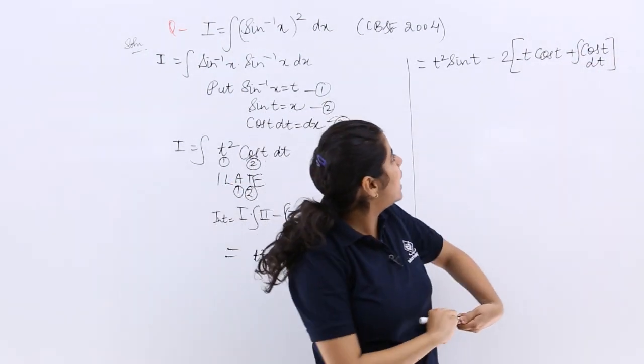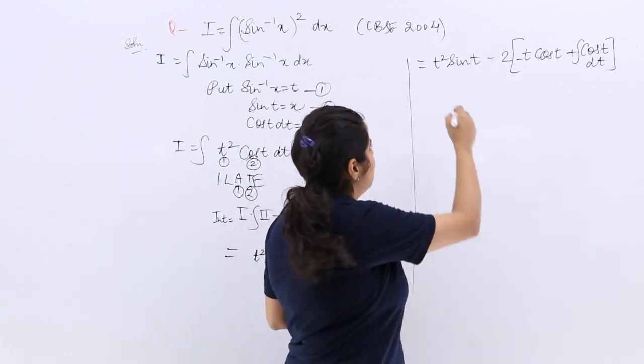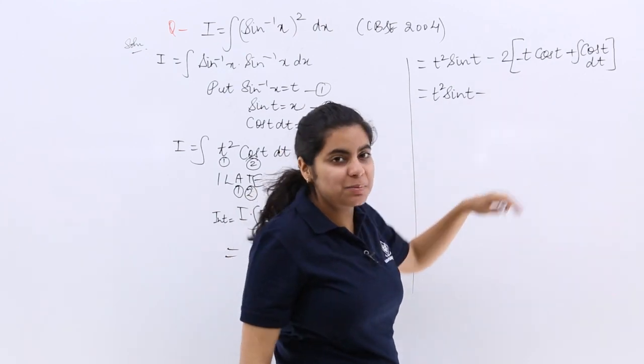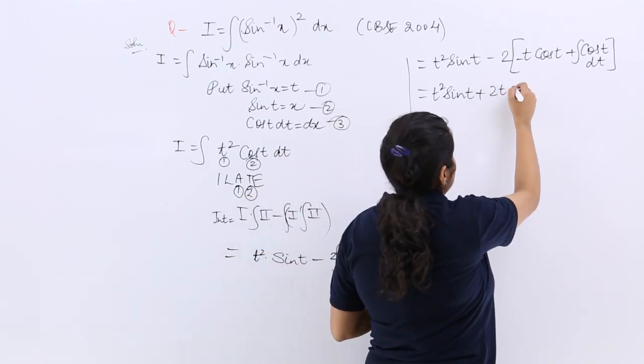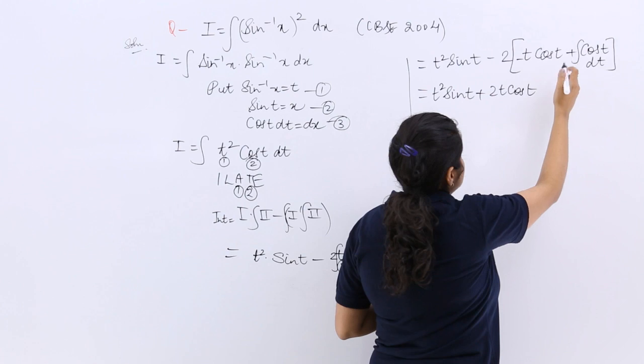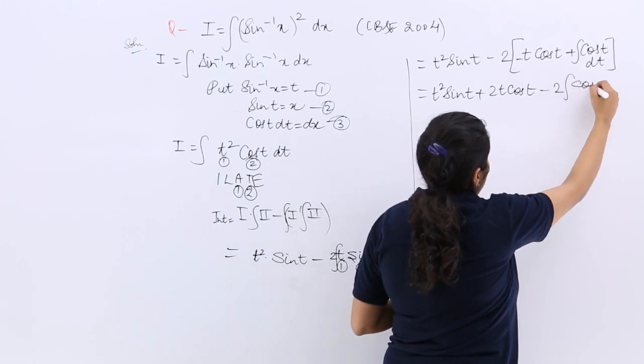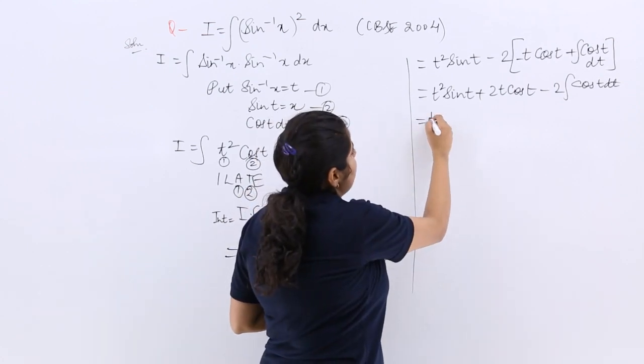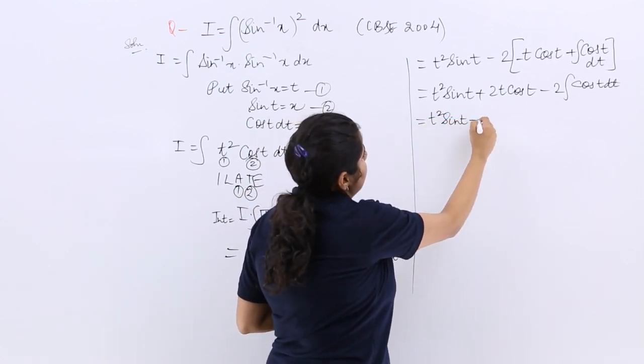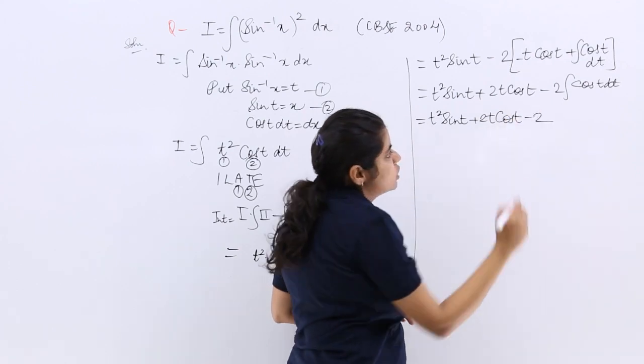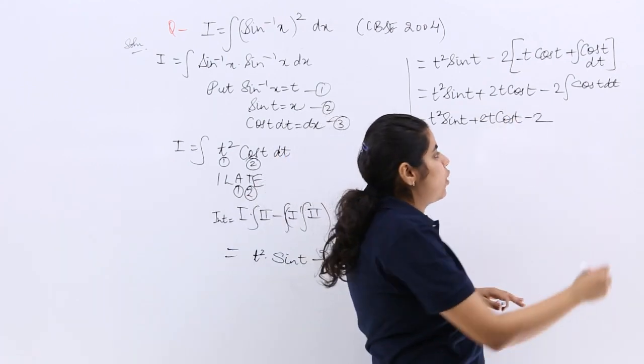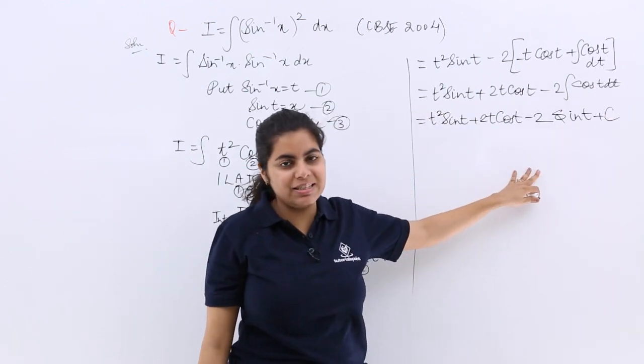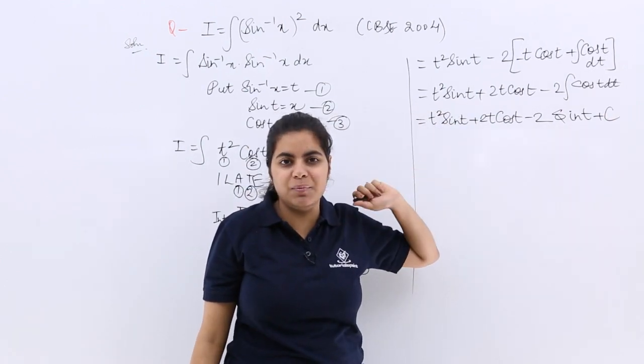Minus minus becoming plus, so plus 2t cos t minus—plus becoming minus—integration of cos t with respect to t. Now again, t squared sin t plus 2t cos t minus 2. What is the integration of cos? It is nothing but sin t plus C.